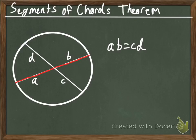And then we have the second chord, which is broken up into segments C and D. Well, we have a theorem that says if we take the two parts of the first chord and we multiply them together, so A times B, it's going to equal the two parts of the second chord multiplied together, C and D.